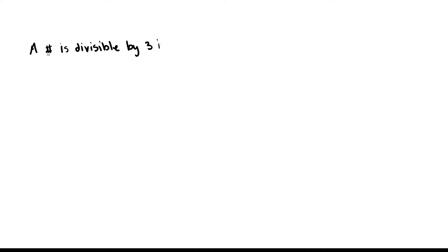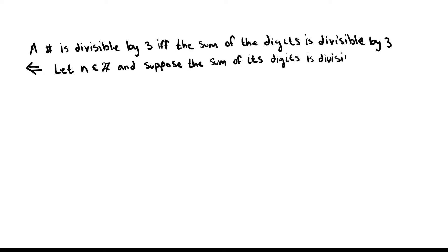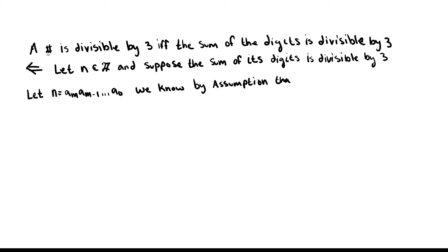Today we're going to look at the backwards direction of: a number is divisible by 3 if and only if the sum of its digits is divisible by 3. To do that, we're going to let n be an integer and suppose that the sum of its digits is divisible by 3. We write the digits as a_m, a_{m-1}, all the way down to a_0, and we know by assumption that a_m + a_{m-1} + ... + a_0 = 3k for some integer k.